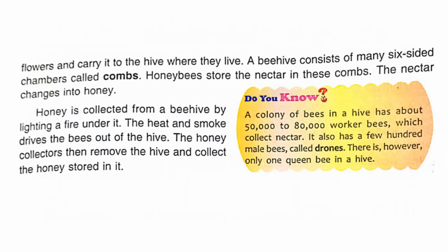A colony of bees in a hive has about 50,000 to 80,000 worker bees which collect nectar. It also has a few hundred male bees called drones. There is, however, only one queen bee in a hive.